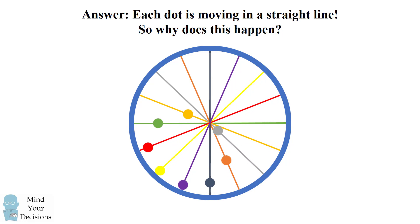So we know that each dot is moving in a straight line, but now the bigger question is why does this happen? What's the geometrical explanation?